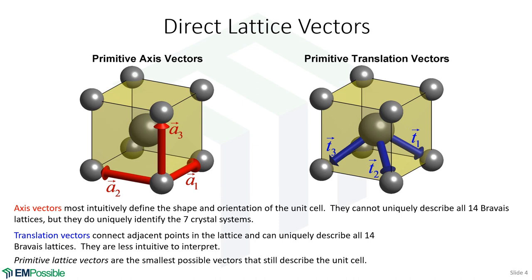The second type of lattice vector is called translation vectors. When most people say lattice vector, they're really talking about these translation vectors. Translation vectors do uniquely describe all 14 Bravais lattices, but they're less intuitive. I can't look at the translation vectors and immediately tell you what type of lattice it is, its size, and shape — I'd really have to think about it and probably plot points on a computer.